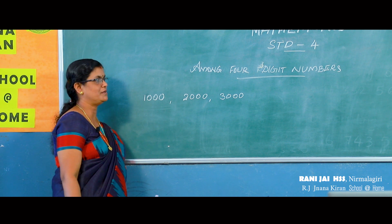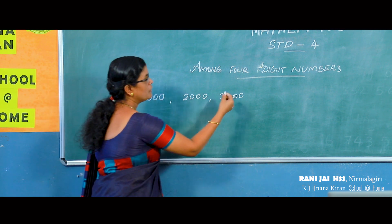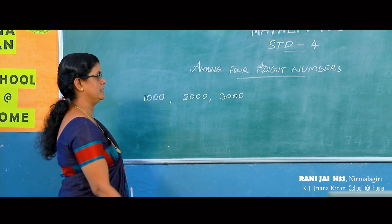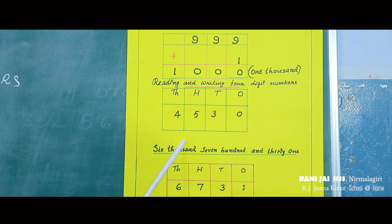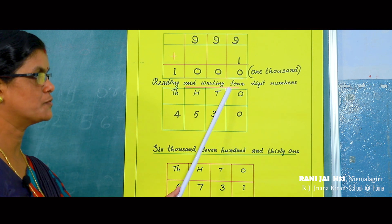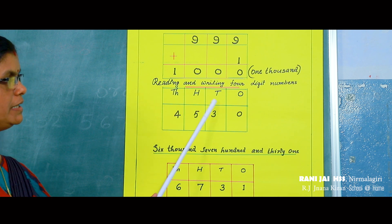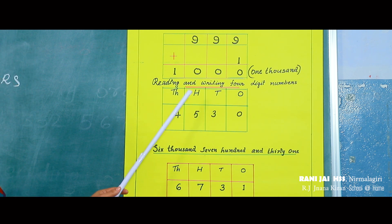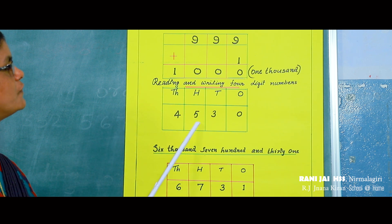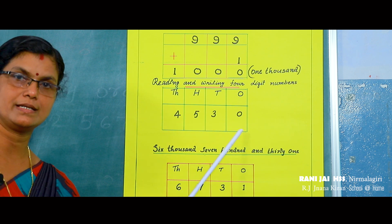What about this one? Very good — this is three thousand. Now let's try to read another number. How can you read this number? Look at this: O means ones place, T means tens place, H means hundreds place, and Th means thousands place. Then very simply — you know five hundred, so this is 4530.